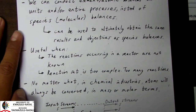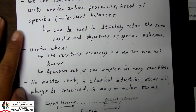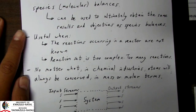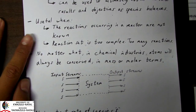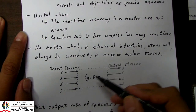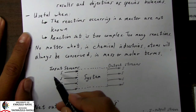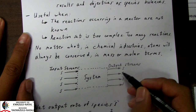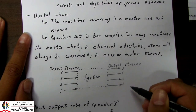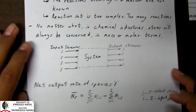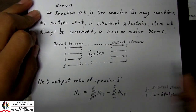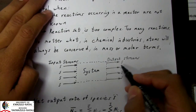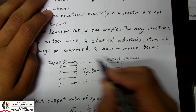Element balances have their advantages and disadvantages. They are particularly useful when the reactions occurring in a reactor are not known — in other words, they are perhaps too complex, or there are too many reactions. We can use element balances ultimately because no matter what, in chemical industries, atoms will always be conserved, whether we are talking in mass or molar terms. Let's consider just any arbitrary system. We have different species S going in and species S coming out, and the net output rate of species is defined as the output of each species minus the input.